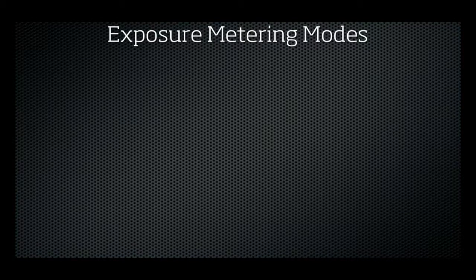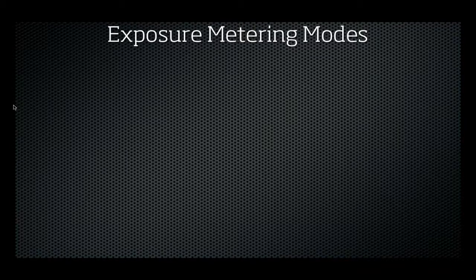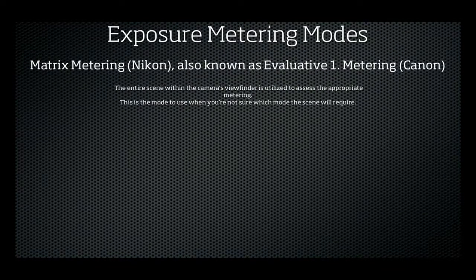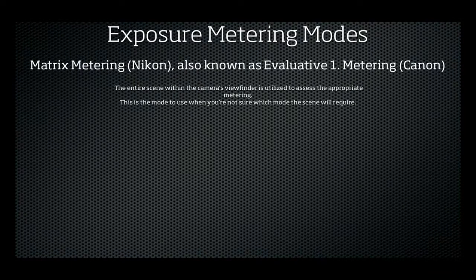I'm going to concentrate on two types of cameras: Nikon and Canon, which are probably the two most popular digital cameras on the market. The reason we're looking at both is that the metering modes are sometimes named slightly differently on each. For example, Matrix as it's known on Nikon is also called Evaluative on Canon. This is standard metering — good for most situations — and it basically utilizes the whole viewfinder to look at the scene and give you the correct metering.